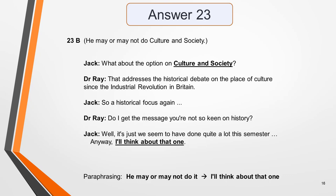Answer 23 is B — he may or may not do culture and society. In the dialogue, the tutor asks about the culture and society option, which addresses the historical debate on the place of culture since the Industrial Revolution in Britain. Jack notes they seem to have done quite a lot of history this semester, and concludes: 'Anyway, I'll think about that one.' For 'he may or may not do it', Jack says: 'I'll think about that one.'